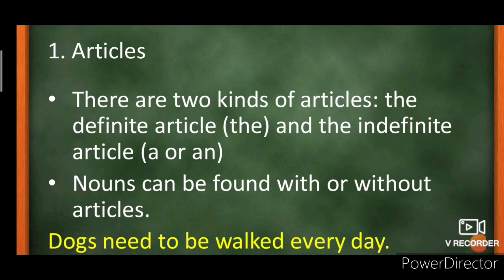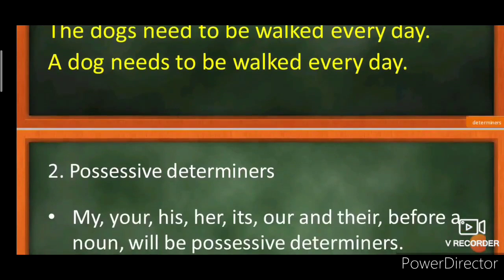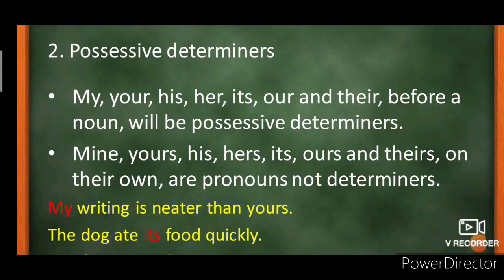We use 'the' for a particular thing. We use 'an' before vowels and 'a' before consonants. The second type of determiners is possessive determiners. There is a slight difference between possessive determiners and possessive pronouns. My, your, his, her, its, our, and their — placed before a noun — are possessive determiners.